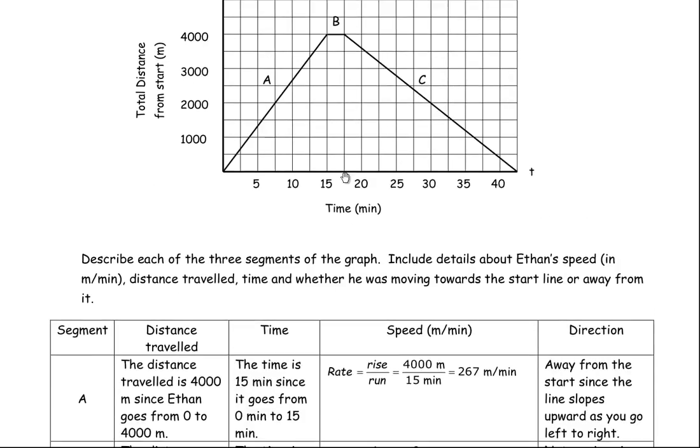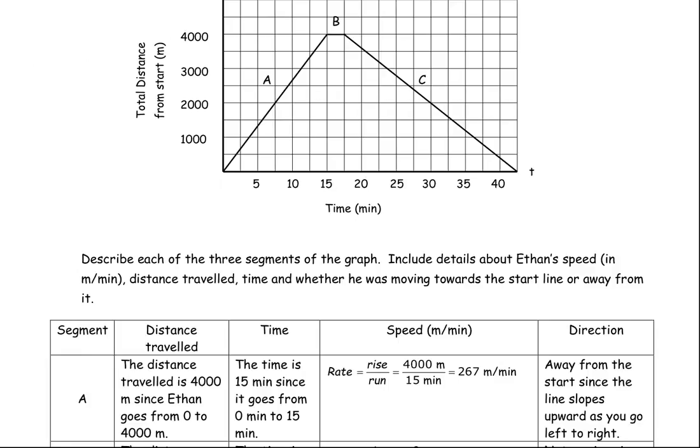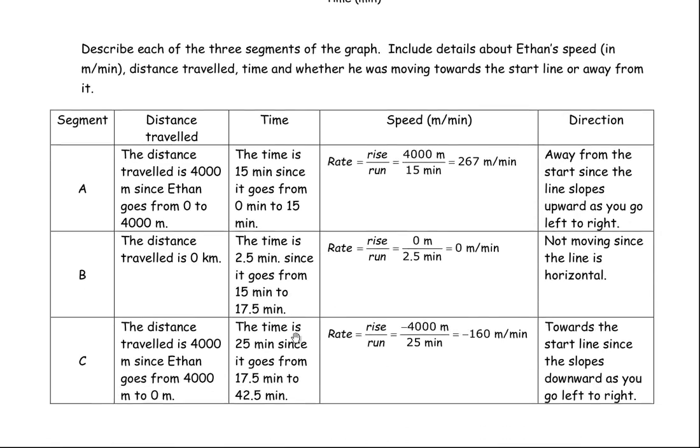This would be at 17 1⁄2 minutes, because it's halfway between 15 and 20, so that's 17 1⁄2. So 17 1⁄2 to this would be 42 1⁄2. So we could just go to get the time: 42 1⁄2 minutes at the end minus the 17.5. So he traveled for 25 minutes. You could also count on the graph. Every 2 blocks is 5 minutes, so 5, 10, like that. So if we start here, this would be 5, 10 minutes, 15, 20, 25. So you could do that as well to get the time. So 25 minutes.